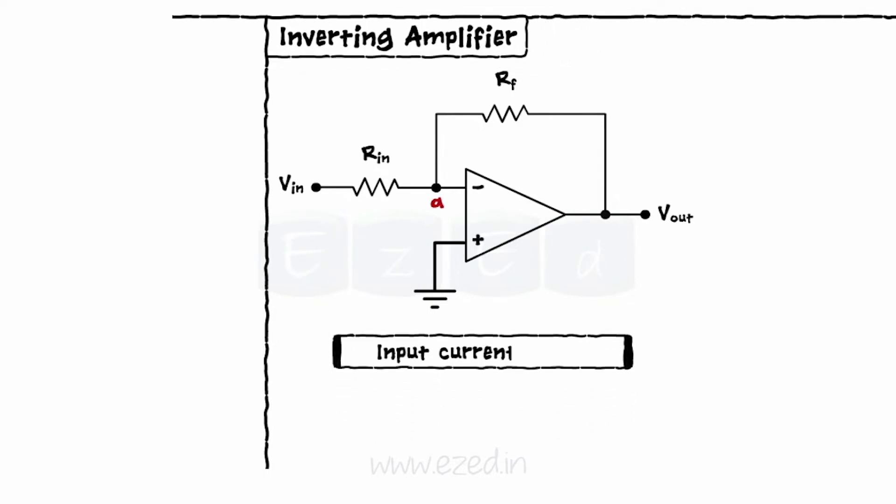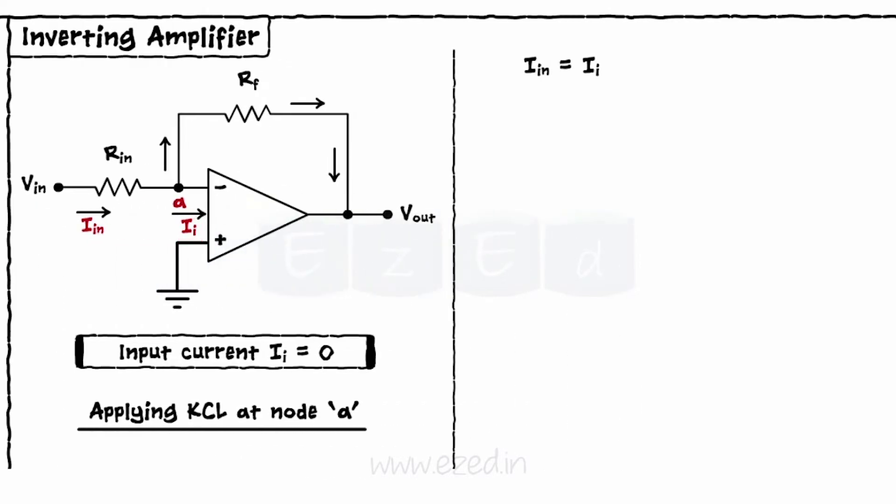Input current of an op amp is zero. So, no current flows into an op amp at node A. Applying KCL at node A, I in equal to I I plus I F. But I I equals zero. Hence, I in equals I F.